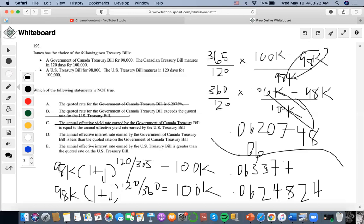Okay, now the annual effect earned by the Government of Canada is less than the quoted rate on the—no, that's not true. The annual earned by the U.S. Treasury Bill is greater than the quoted rate. Yes, that's true. So C is the answer. D is the answer.